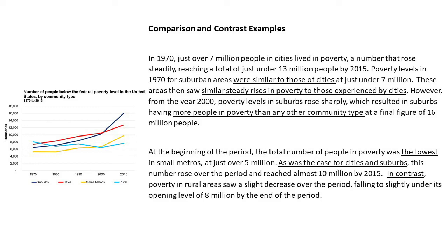Comparative and superlative adjectives are a great way to show comparison — words like 'more,' 'bigger,' 'similar to.' For example, I use 'similar' again when I say suburbs 'saw similar steady rises to those experienced by cities.' The word 'however' signals contrast. The phrase 'which resulted in suburbs having more people in poverty than any other community type' — all of that is comparison and contrast language, and it helps your score significantly.